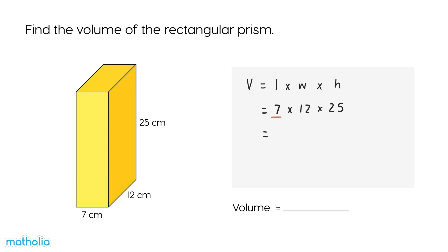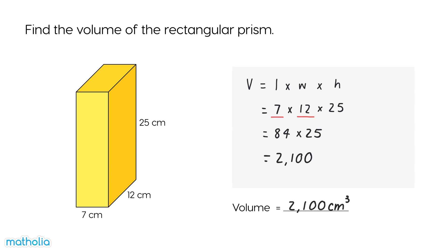7 times 12 is 84. 84 times 25 is 2100. So the volume of the rectangular prism is 2100 cubic centimetres.